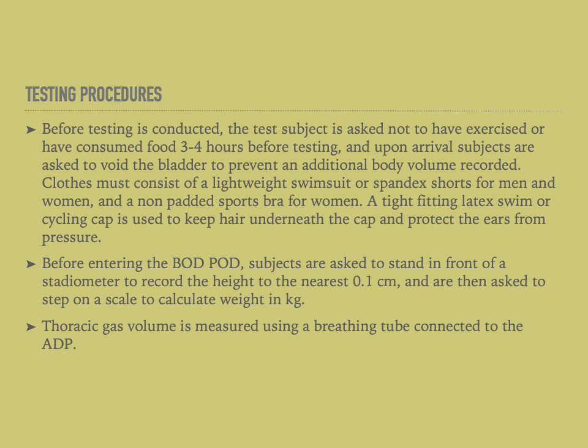Before entering the BODPOD, subjects are asked to stand in front of a stadiometer to record height to the nearest 0.1 centimeter, and are then asked to step on a scale to calculate weight in kilograms. This is done with minimum clothing to calculate the correct weight. The ADP machine is used to calculate the thoracic gas volume by having the subject breathe into a tube connected directly to the ADP, calculating the maximum tidal volume.